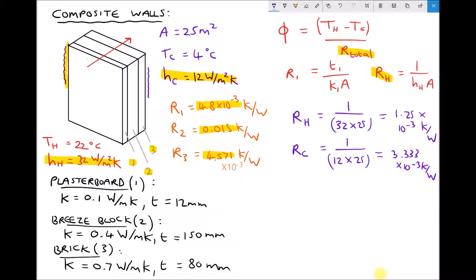So the next step then is to calculate our total thermal resistance. And the way that we're going to do that is by adding our 5 thermal resistances together. So we have R1, R2 and R3. We have RH and we have RC. So adding all of those values together we have 4.8 times 10 to the minus 3, plus 0.015, plus 4.571 times 10 to the minus 3, plus 1.25 times 10 to the minus 3, plus 3.333 times 10 to the minus 3. Giving us a value of R total equal to 0.028954 Kelvin per watt.